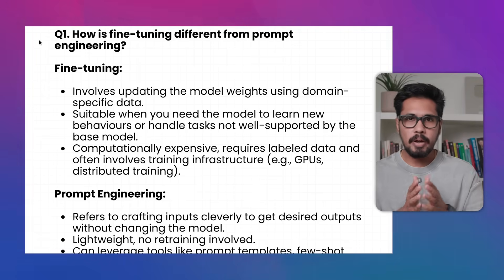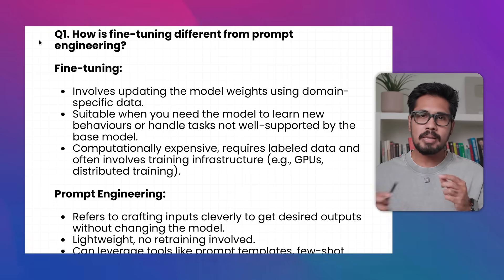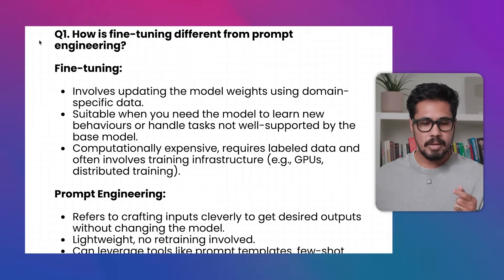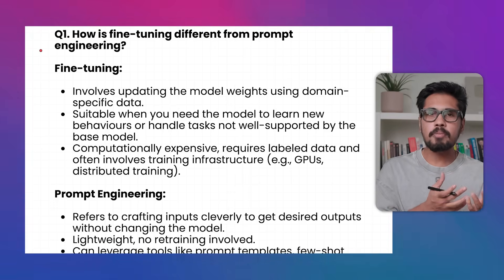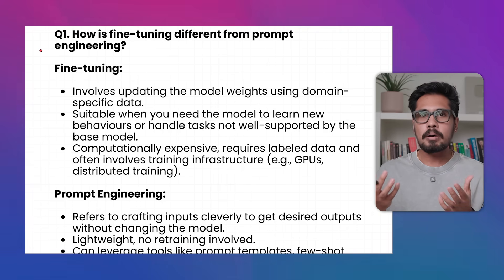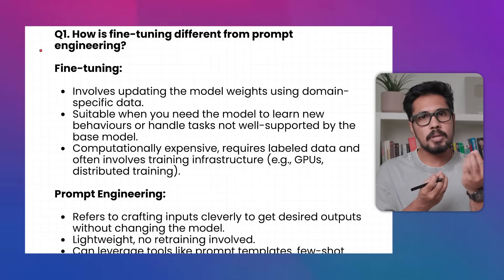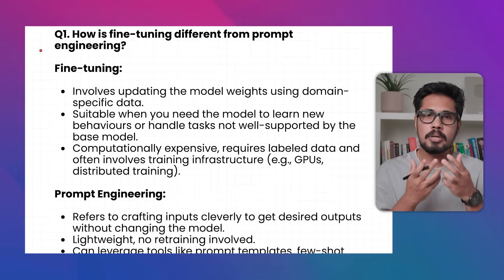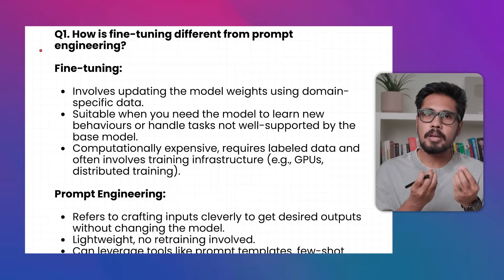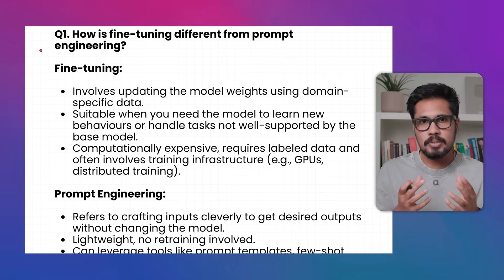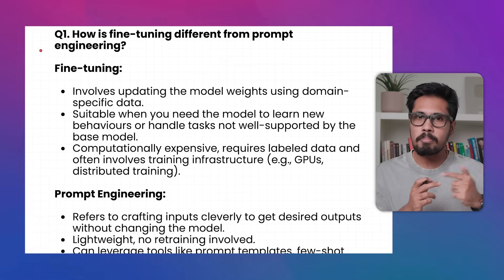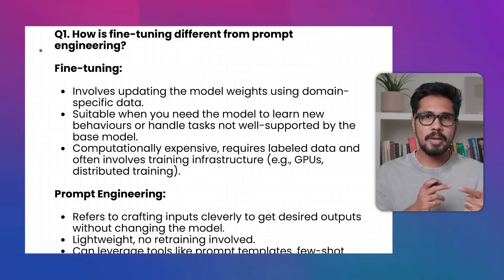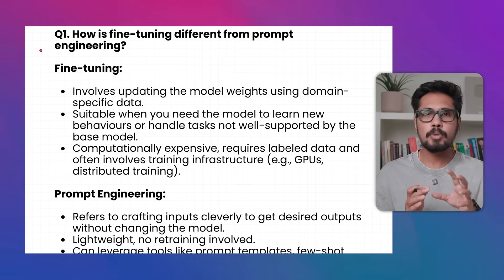Fine-tuning involves the updation of model weights. All the LLM models we use, like ChatGPT, are developed with the help of neural networks. Within these neural networks, we have the concept of model weights. If we update those model weights with domain-specific data, we call it fine-tuning.